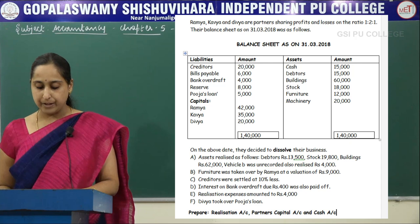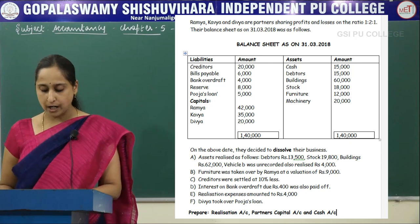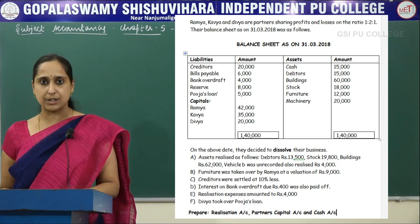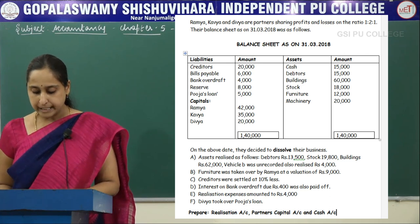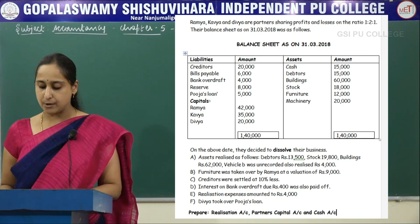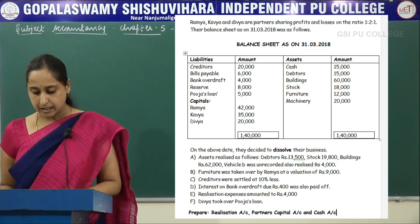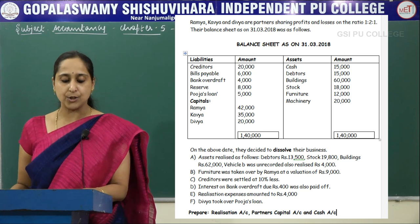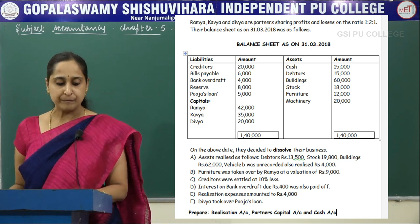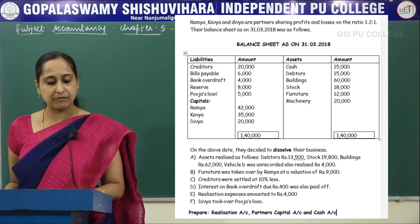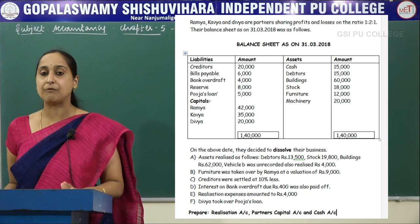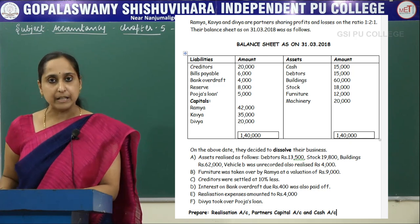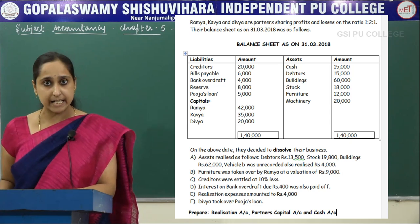Assets realized as follows: Debtors 13,500; Stock 19,800; Buildings 62,000; Vehicle, which was unrecorded, also realized 4,000. Furniture was taken over by Ramya at a valuation of Rs. 9,000. Creditors were settled at 10% less. Interest on bank OD due Rs. 400 was also paid off.